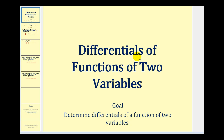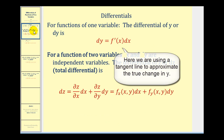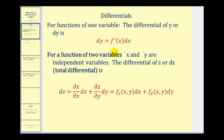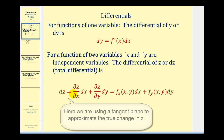Welcome to a lesson on differentials for functions of two variables. In calculus one, we learned that for functions of one variable, differential y or dy was equal to f prime of x times dx. For functions of two variables, where z is defined in terms of x and y, x and y are independent variables. Therefore, differential z — sometimes referred to as total differential — is equal to the partial derivative of z with respect to x times dx, plus the partial derivative of z with respect to y times dy.